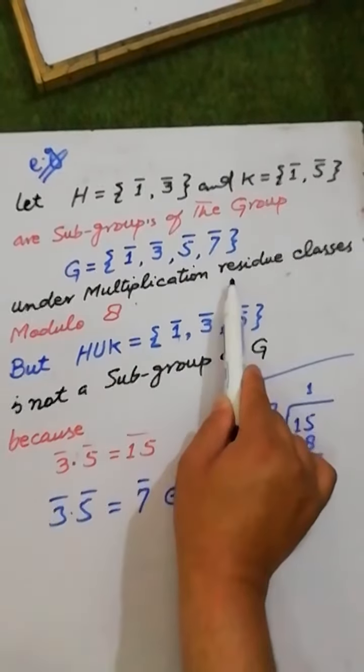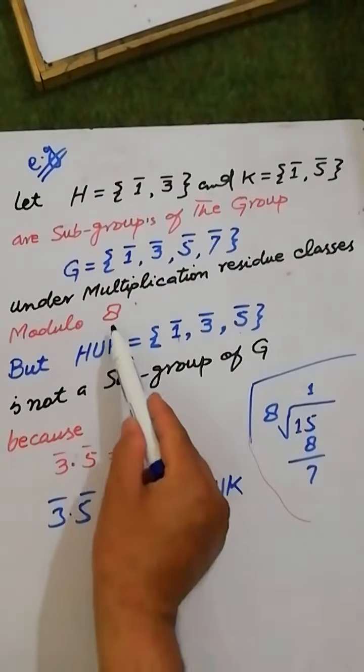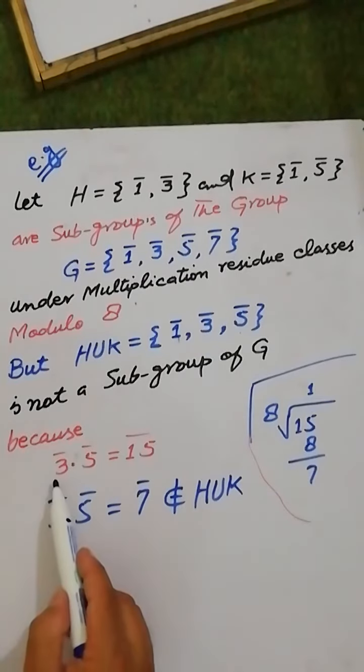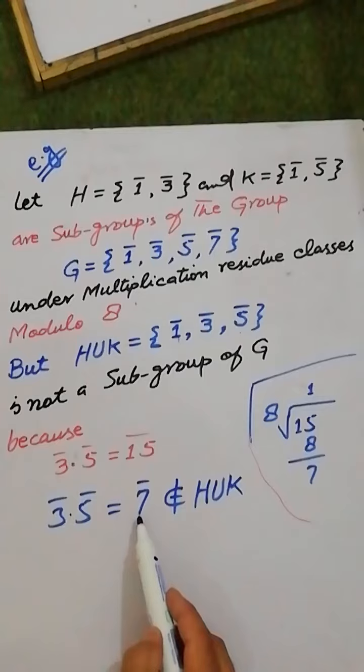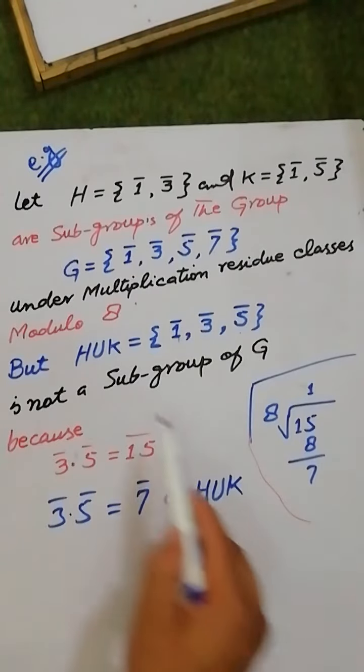under residue classes modulo 8: dividing 15 by 8 gives remainder 7. Therefore, the multiplication of 3 and 5 equals 7, which is not an element of H union K.